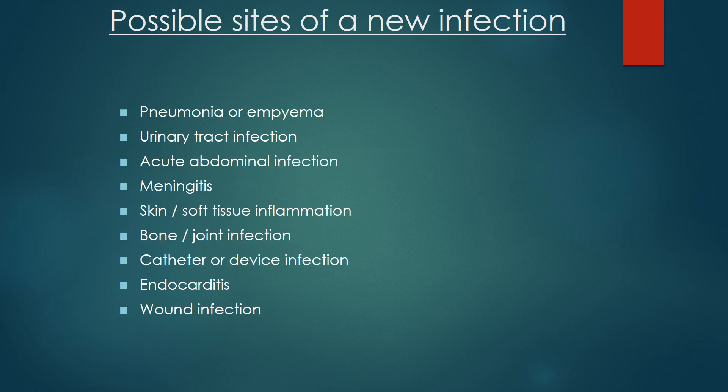Possible sites of new infection include pneumonia or empyema, urinary tract infection, acute abdominal infection, meningitis, skin and soft tissue inflammation, bone and joint infection, catheter or device infection, endocarditis, and wound infection.